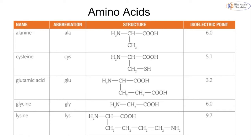Here are just a few examples of amino acids: alanine, cysteine, glutamic acid, glycine, and lysine. Glycine is the most simple amino acid because it is just the main group and its R group is an H.